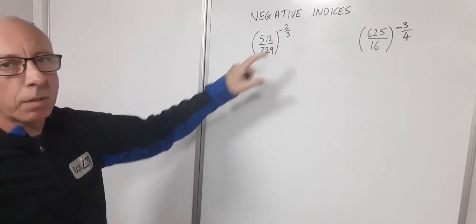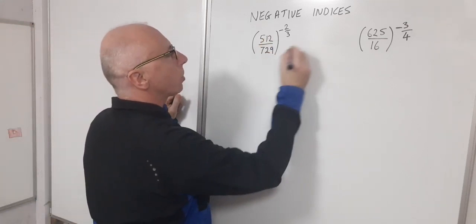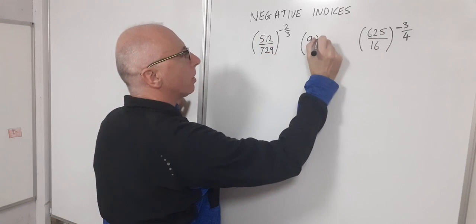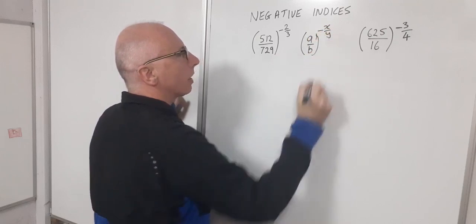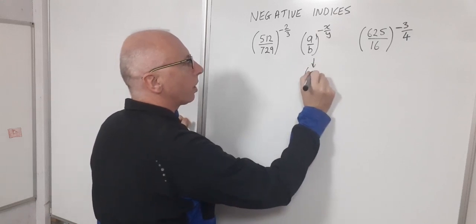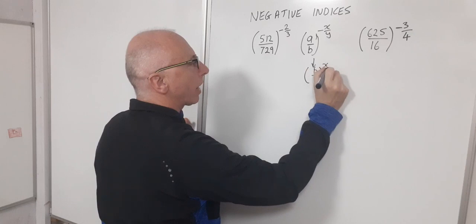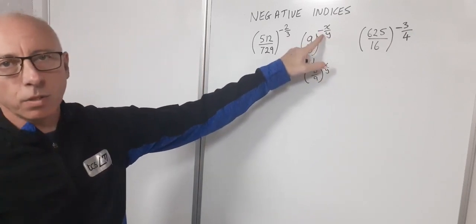So what can we do here? So the rule we can have here, if I just describe this as a over b to the power of minus x over y, that can now change to b over a to the power of x over y. So take the reciprocal and lose the minus sign.